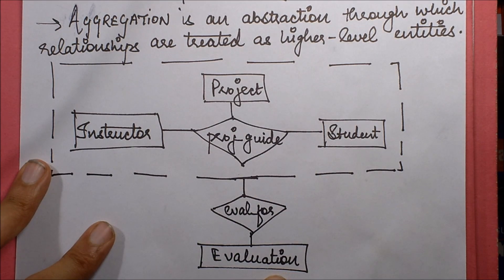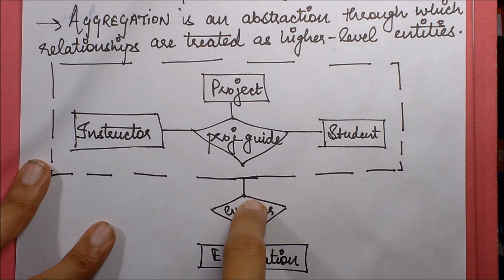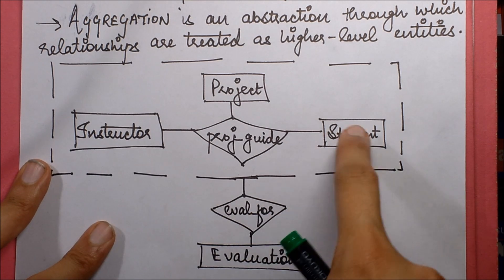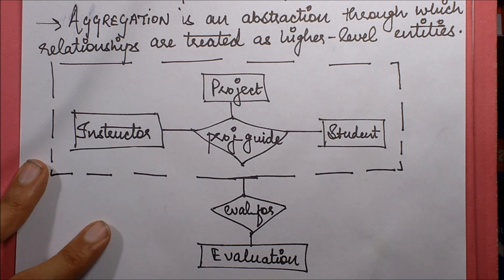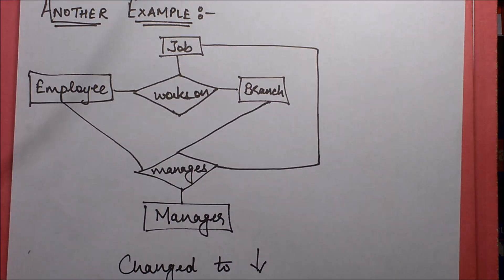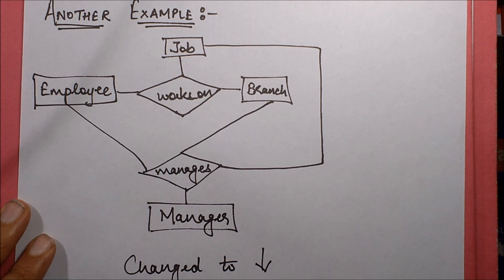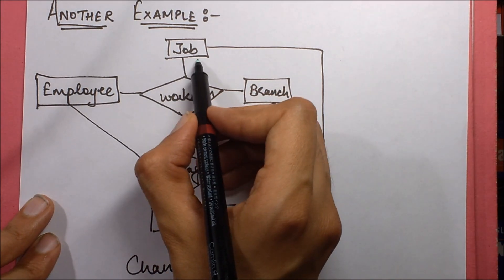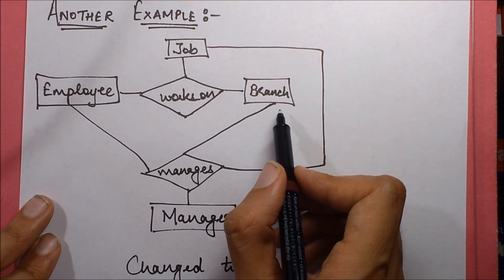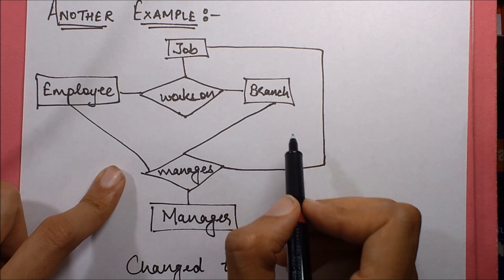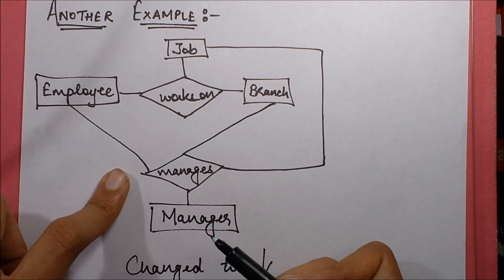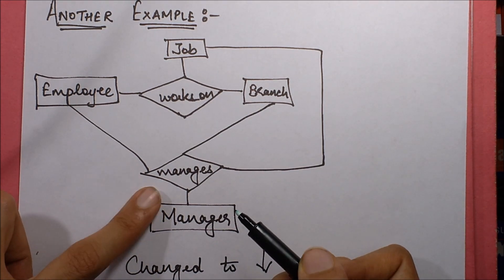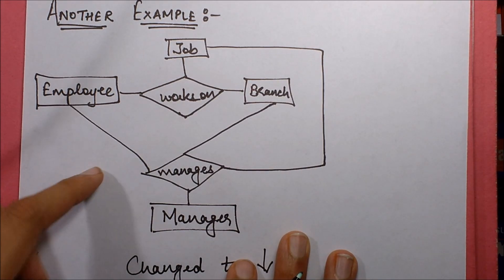This object is then related with evaluation. So the evaluation of the same project is done by the same instructor for the same student, and the entire thing is associated with this evaluation task. Let's take another example to see the same concept. Here we have an employee who works on a particular job in a particular branch, and then this employee manages the branch as a manager.